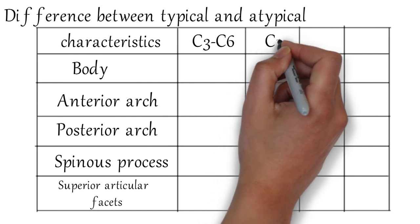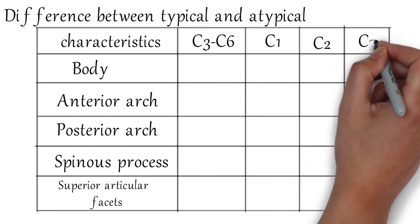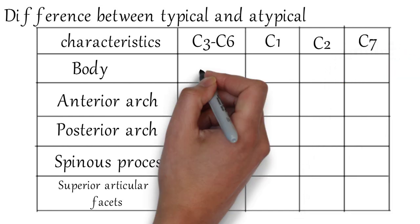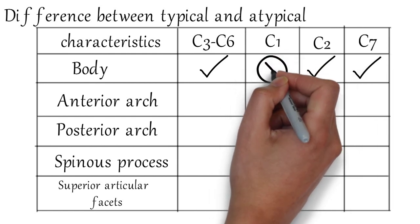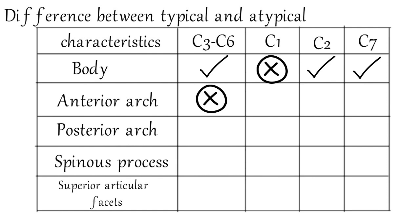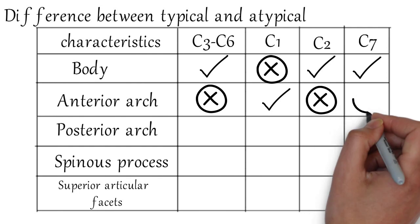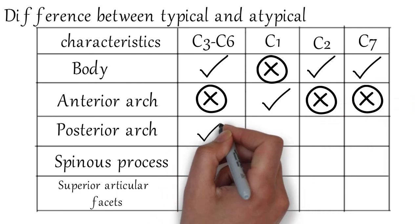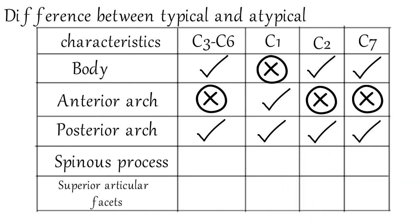Typical vertebrae are C3 to C6. Atypical are C1, C2, and C7. Body is present in typical vertebrae, C2, and C7, but absent in C1. Anterior arch is present only in C1. Posterior arch is present in all of these. The spinous process is bifid in all typical vertebrae and C2, but absent in C1, single and long in C7.